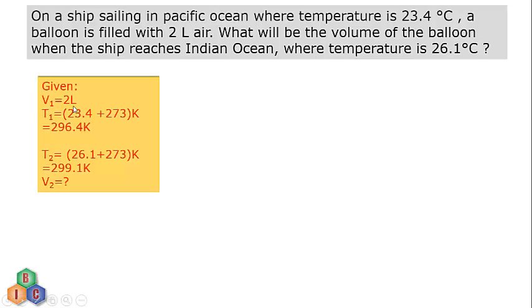V1 is 2 litres. The balloon is filled with 2 litre air, so that is V1, volume 1. Then T1 is given to us as 23.4 degree Celsius. We need to convert it into Kelvin scale, so 23.4 degree Celsius plus 273 Kelvin will give us the value as 296.4 Kelvin.